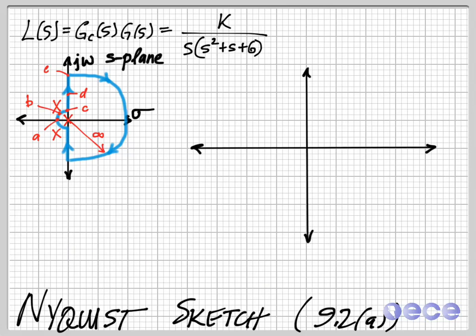So now we're going to draw the contour in the L of s plane. This is how the contour varies as we put it through the function L of s. We're going to take each of these points A through E and plot them, and then we're going to draw the contour between them.